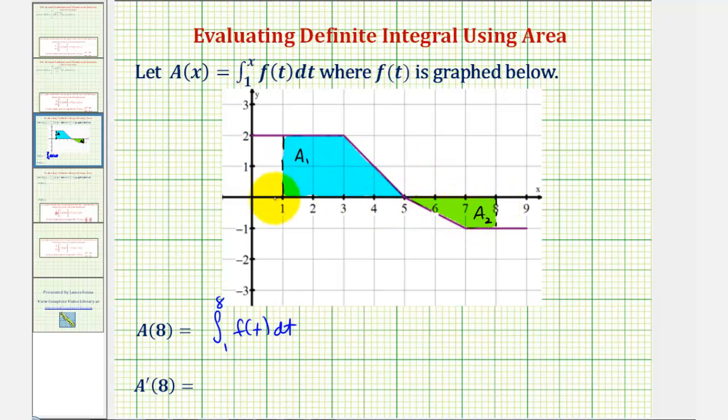We can use geometric formulas to find these areas, but I think we can also just count the squares here. We have one, two, three, four, five full squares, and two half squares. So a sub one would be six square units.